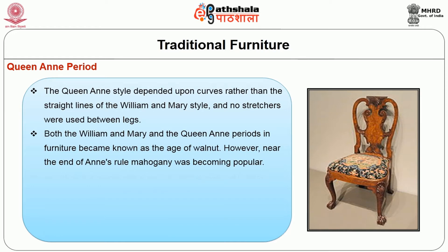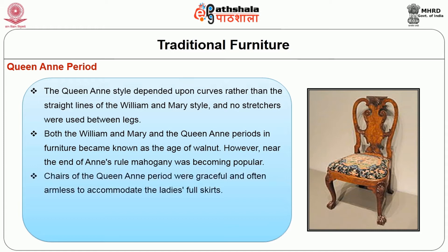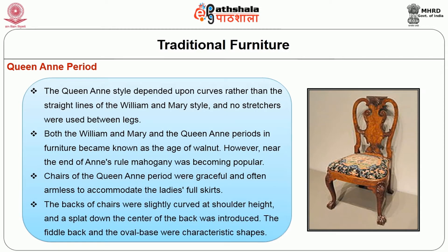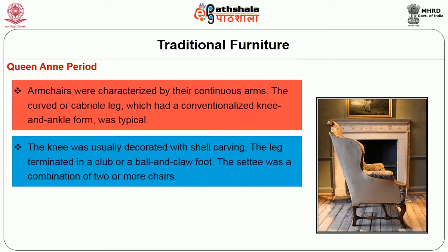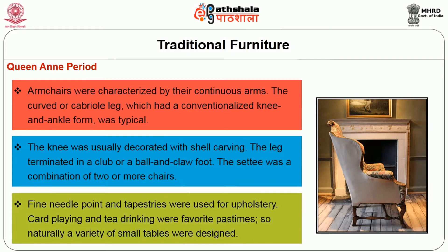Both the William and Mary and the Queen Anne periods became known as the Age of Walnut; however, near the end of Anne's rule, mahogany was becoming popular. Chairs of the Queen Anne period were graceful and often armless to accommodate the ladies' full skirts. The backs of chairs were slightly curved at shoulder height, and a splat down the center of the back was introduced. The fiddle back and the oval back were characteristic shapes. The curved or cabriole leg, which has a conventionalized knee and ankle form, was typical; the knee was usually decorated with shell carving and the leg terminated in a club or ball and claw foot. The settee was a combination of two or more chairs.